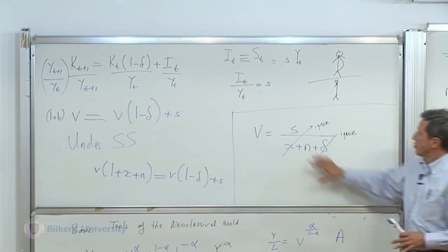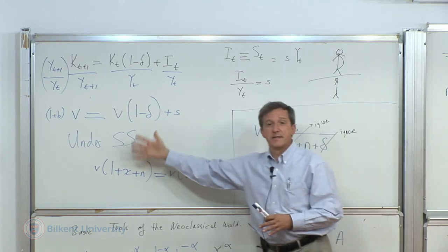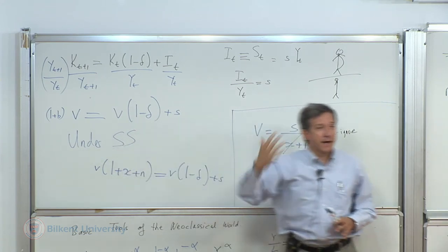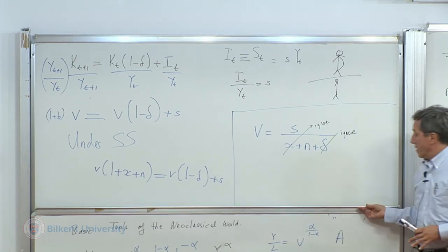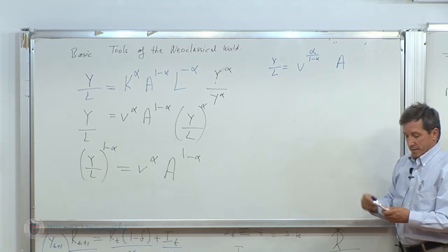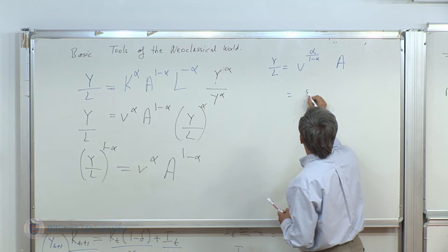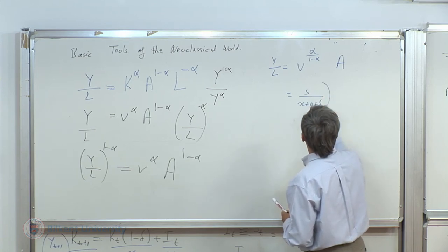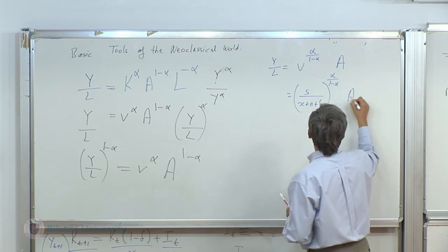But now let's do some fun. So let's introduce our V when under steady state. Now let's be an economist. So over here, instead of V, we are going to use S over X plus N plus delta to the power alpha over 1 minus alpha times A.